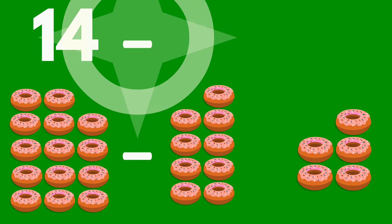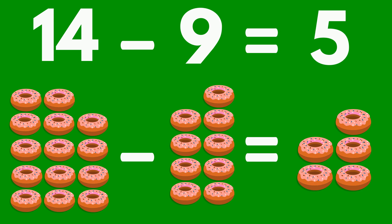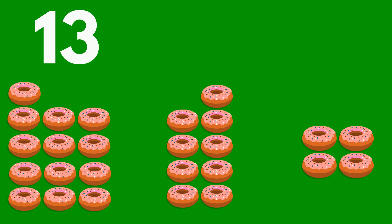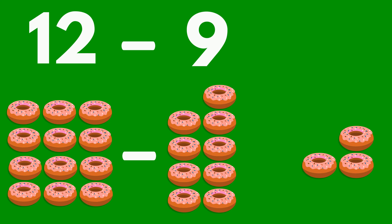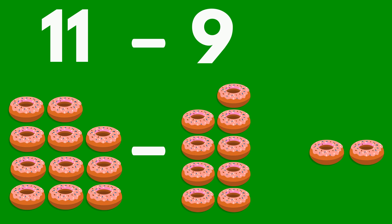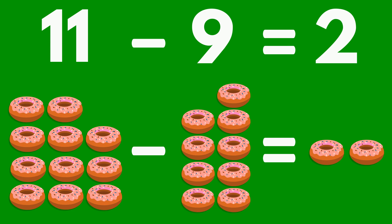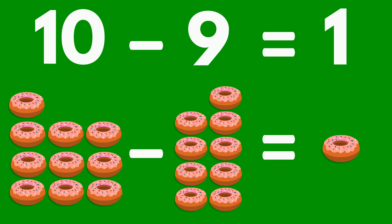14 doughnuts minus 9 doughnuts equals 5 doughnuts. 13 doughnuts minus 9 doughnuts equals 4 doughnuts. 12 doughnuts minus 9 doughnuts equals 3 doughnuts. 11 doughnuts minus 9 doughnuts equals 2 doughnuts. 10 doughnuts minus 9 doughnuts equals 1 doughnut.